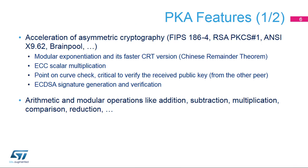Here is a list of operations the PKA can perform. Acceleration of asymmetric cryptography: modular exponentiation and RSA Chinese Remainder Theorem (CRT) exponentiation, ECC scalar multiplication and point-on-curve check, and ECDSA signature generation and verification. Arithmetic and modular operations: arithmetic addition, subtraction, multiplication, and comparison; modular addition, subtraction, and reduction.